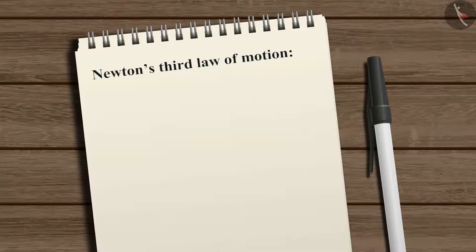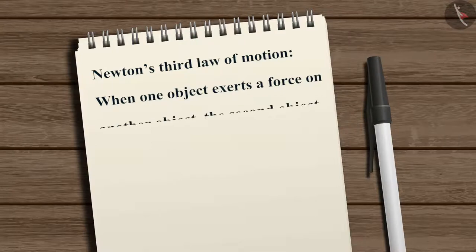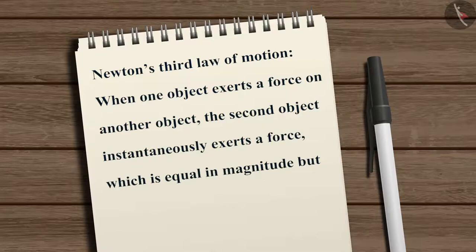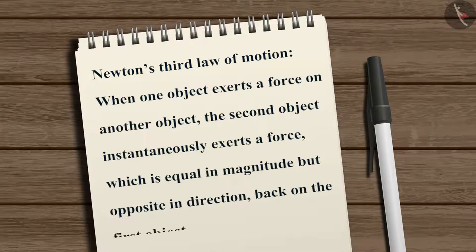Newton's third law of motion says that when one object exerts a force on another object, the second object instantaneously exerts a force which is equal in magnitude but opposite in direction, back on the first object.